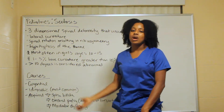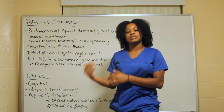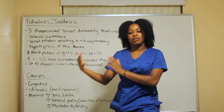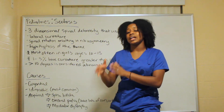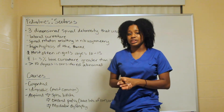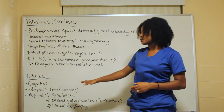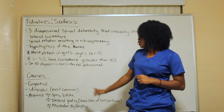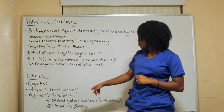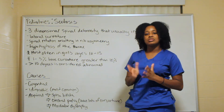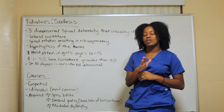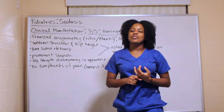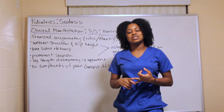You can also have acquired scoliosis, where a pre-existing symptom or disease results in the condition. Examples include spina bifida, cerebral palsy — those patients tend to have a lot of curvature — and muscular dystrophy.